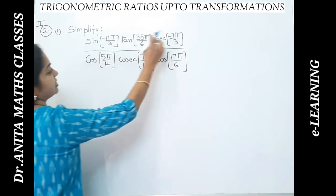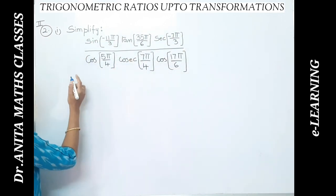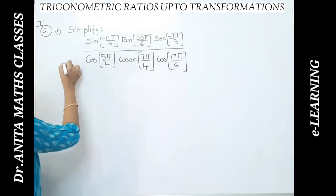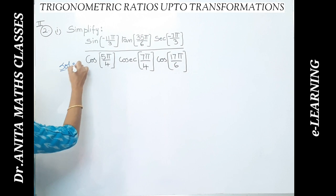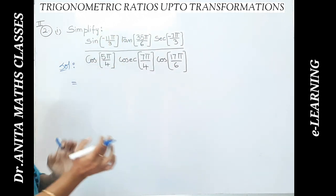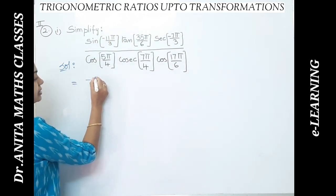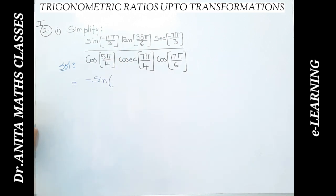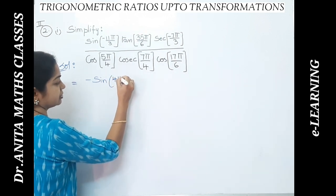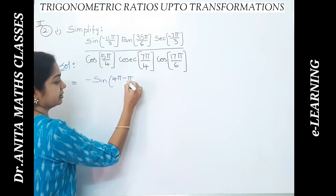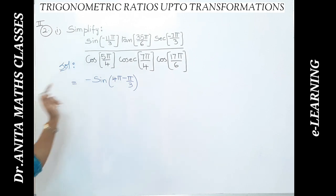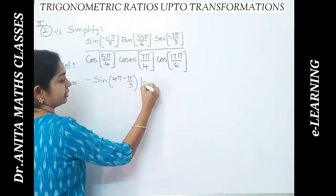The solution — we have to simplify into the simplest form. Sine of minus theta is minus sine theta, so the minus comes out. Now 11π can be written as 4π minus π/3, because 12 minus 1 is 11π. The minus comes out, and now for tan...